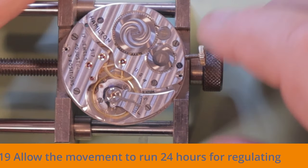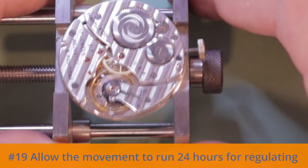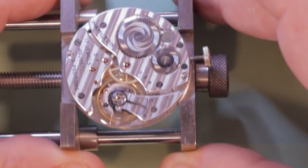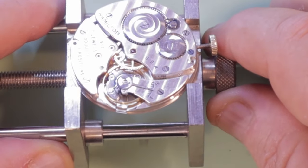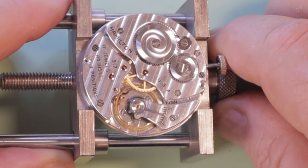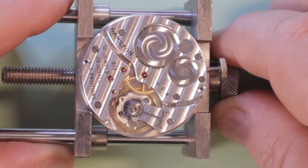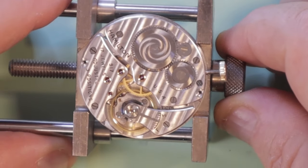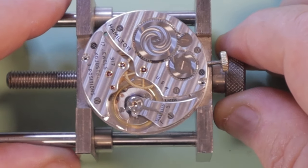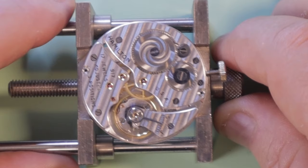Once you've assembled and lubricated the movement, take it to a full wind and allow it to run for a minimum of 24 hours before you try to regulate the watch. This is because lubricants need time to settle into their positions between the arbor and the jewels. The mainspring needs time to stretch and settle into its position in the barrel.